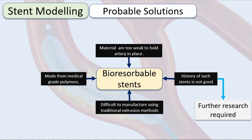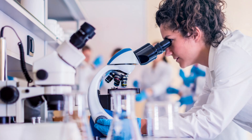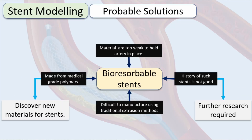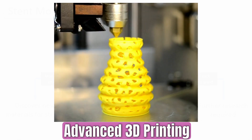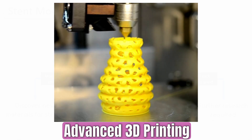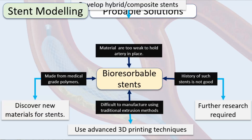What approaches can we take to solve these challenges? Further research will help address the poor history. We need to discover new materials with better properties for stent modeling. We can use advanced 3D printing techniques to manufacture these stents, as these techniques are improving all the time, removing the reliance on extrusion methods. Finally, we can develop hybrid composite stents with enhanced strength that make them acceptable as a stent material.